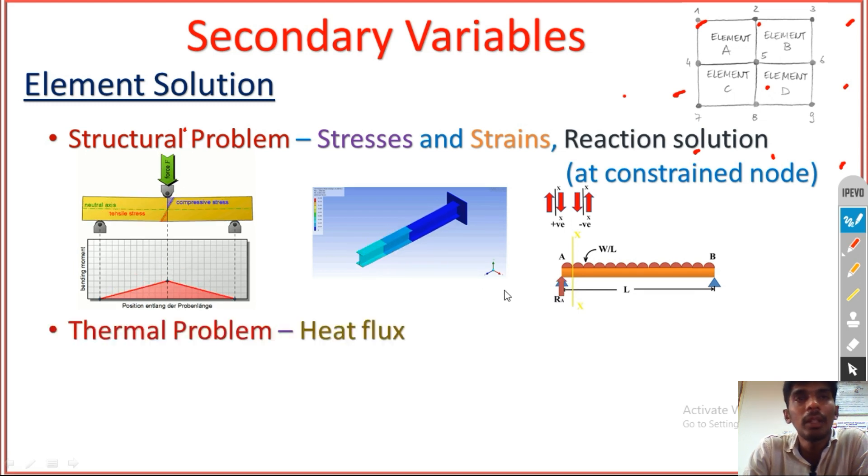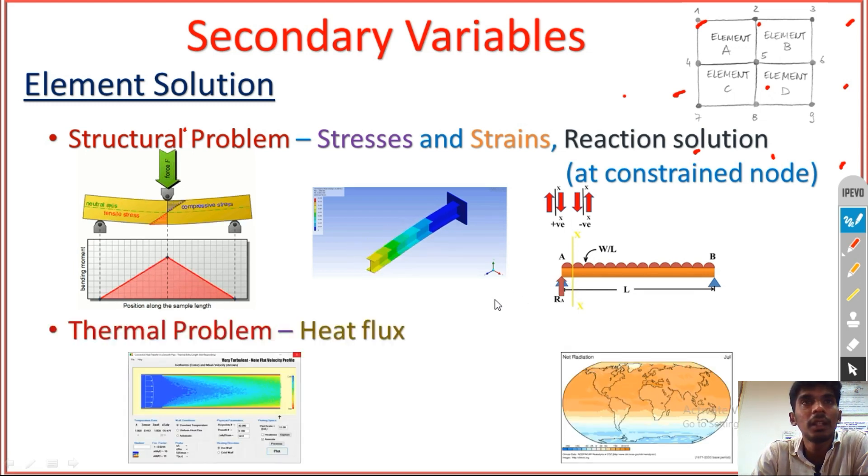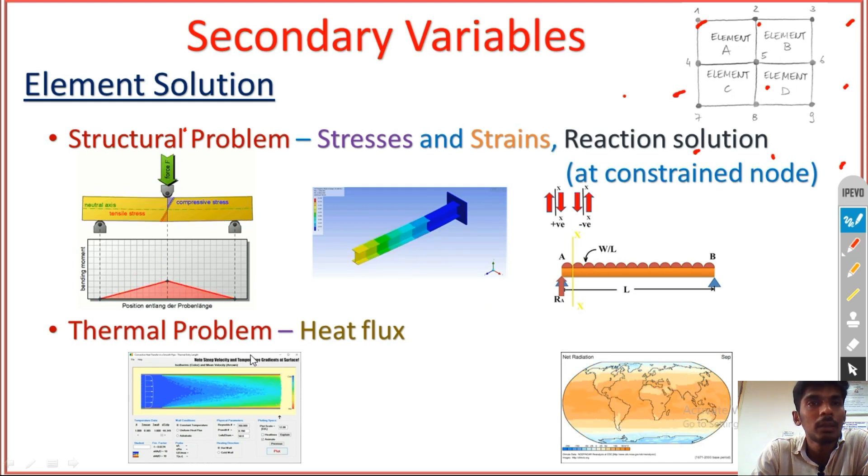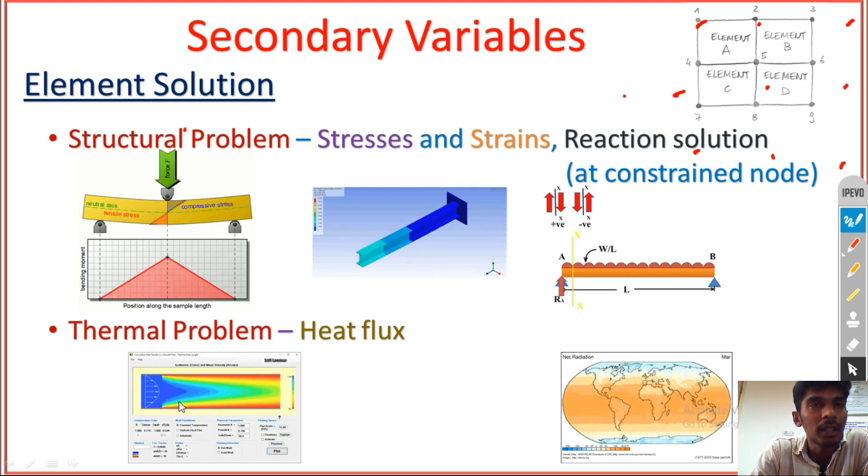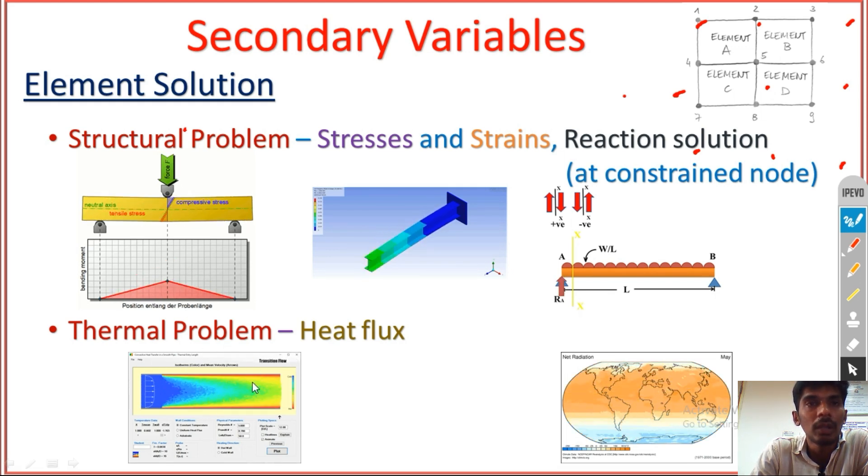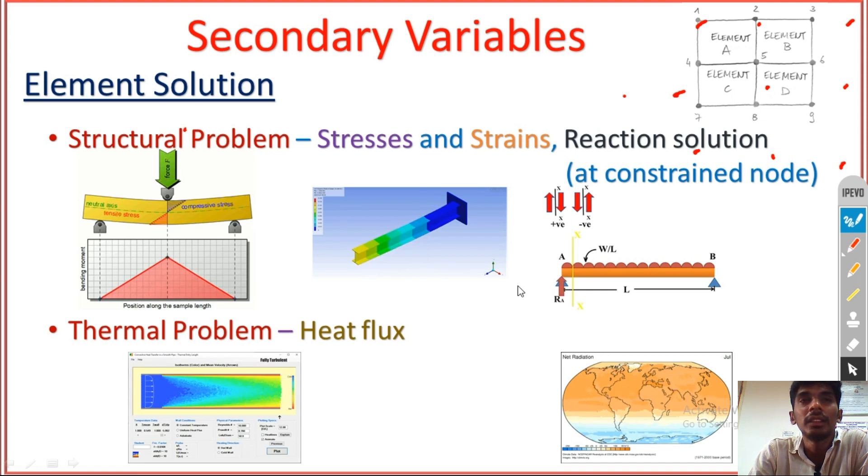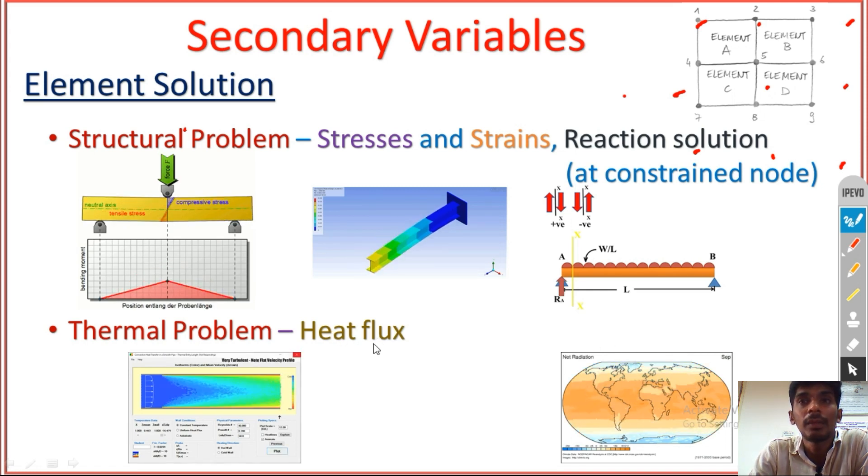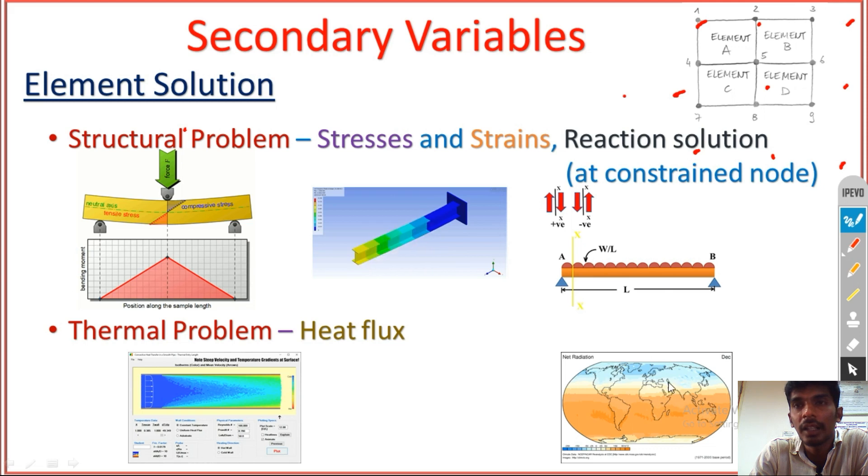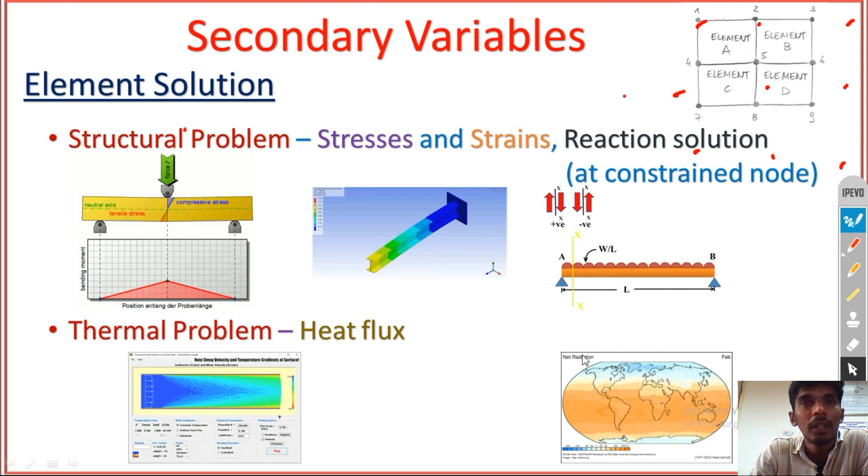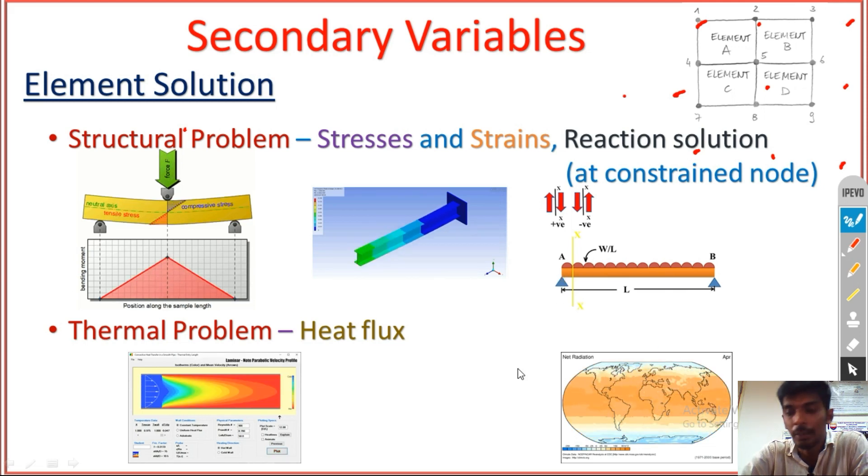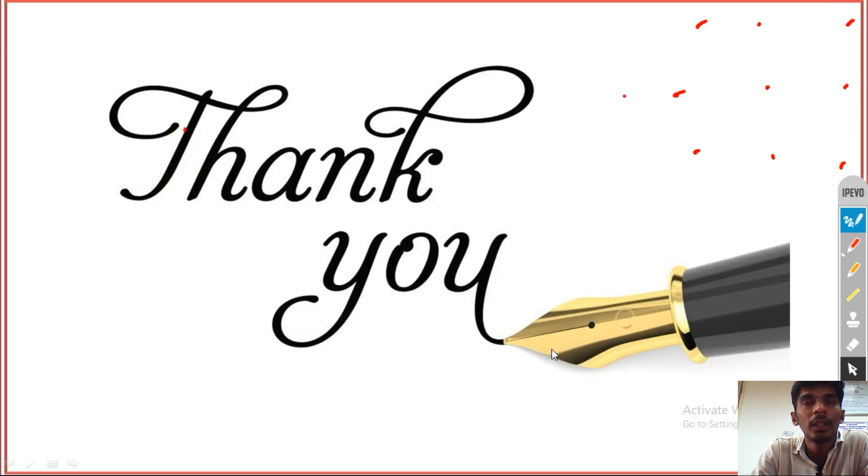In case of thermal problem, heat flux is the secondary variable. If you apply the temperature over that element, the heat flux will be generated through that element. Always we indicate the element solution as a heat flux in thermal problem. This is another example of a globe. It will create the heat flux in thermal images.